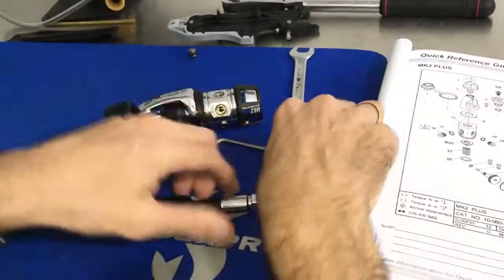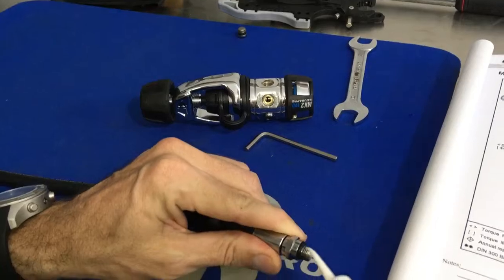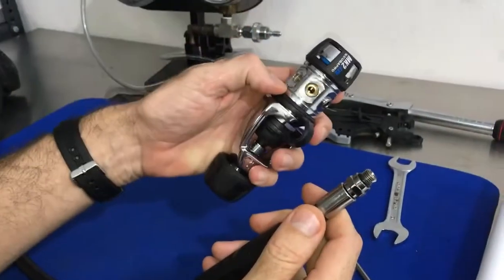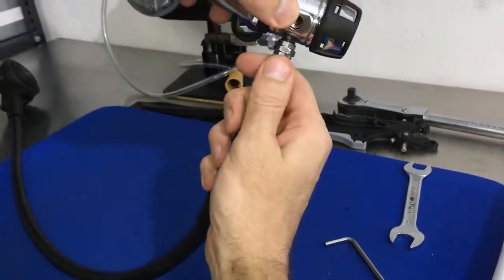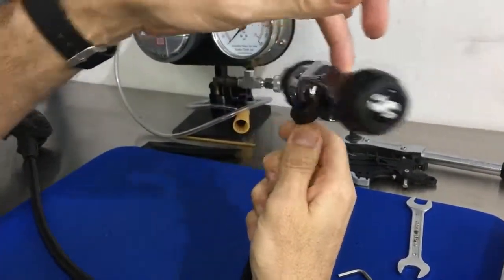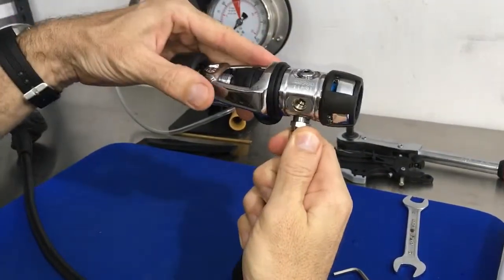If I was going to do a hose, I'll do the same thing. A little bit of lube, and take my first stage. And if I can spin my first stage on like this and it stops, that's stopped.